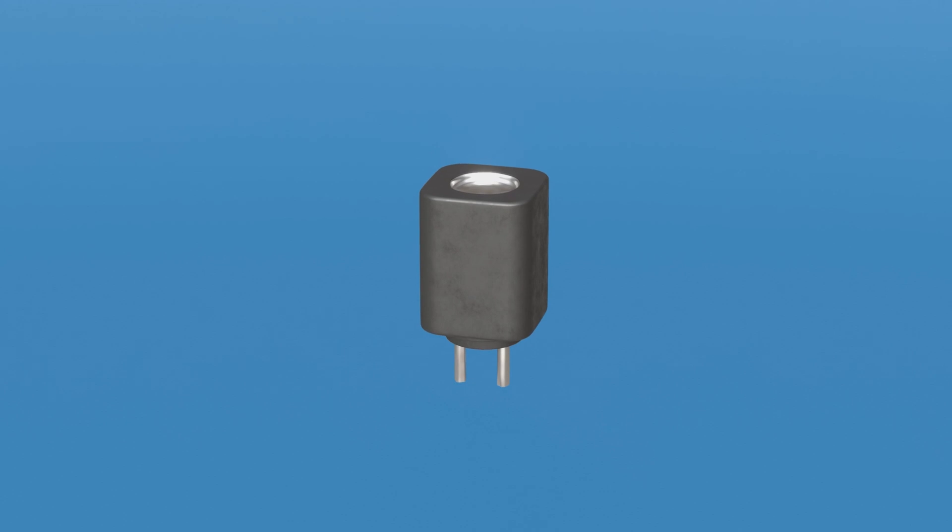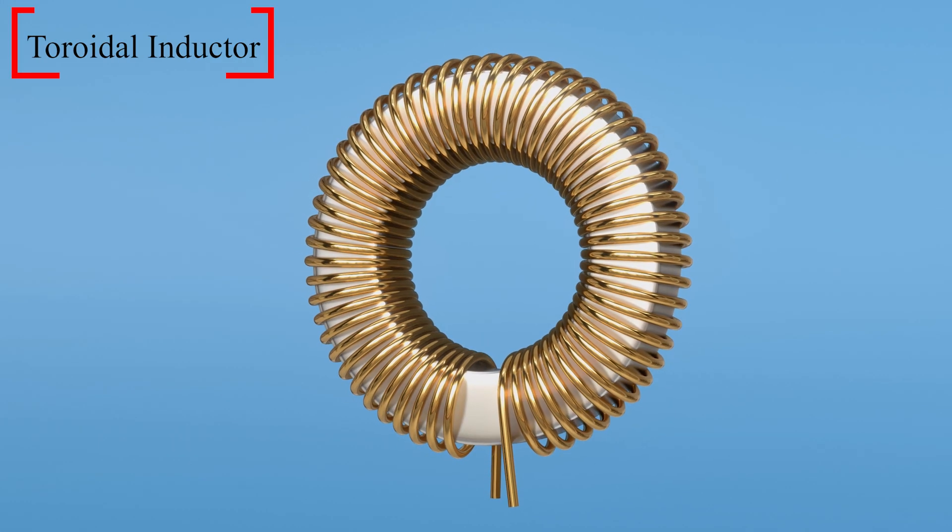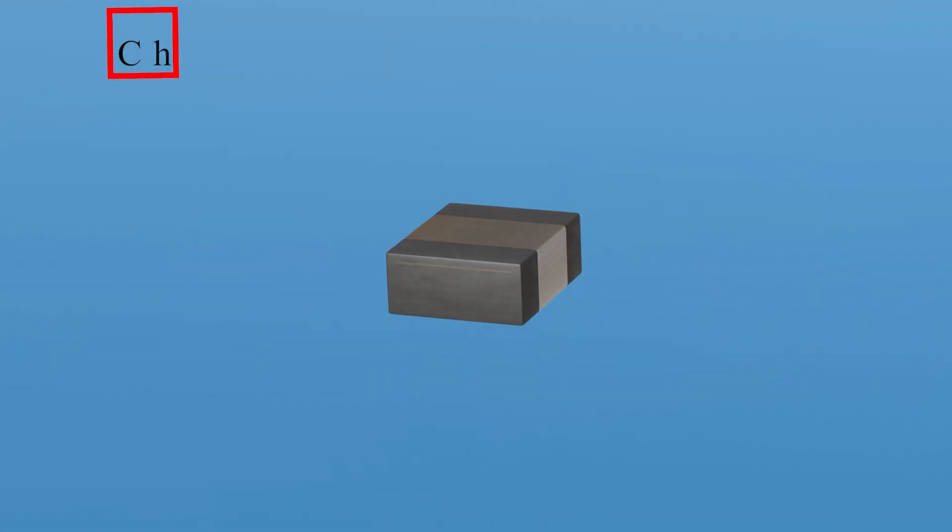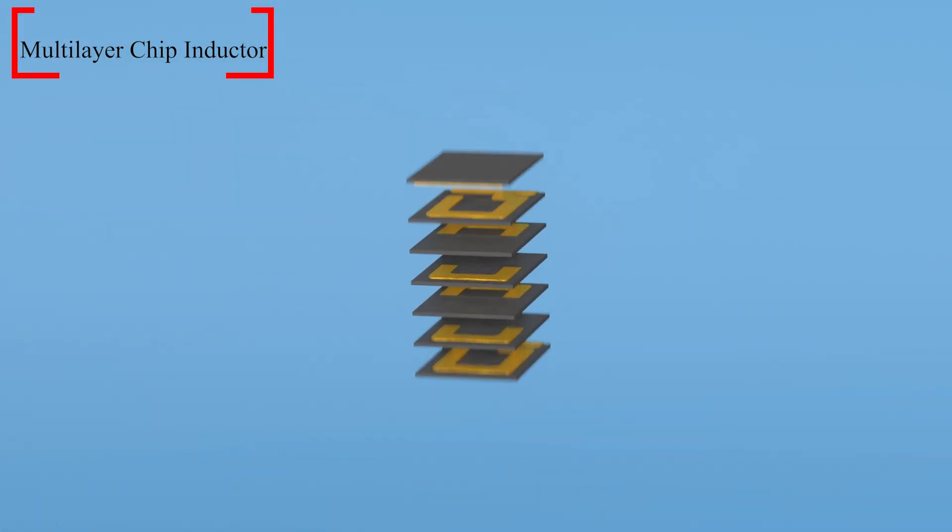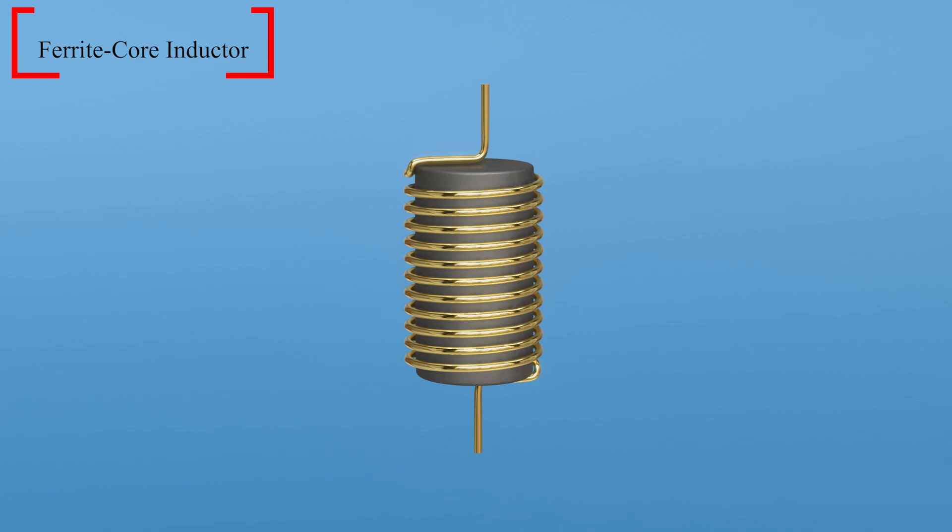Inductors come in different shapes and sizes, like the toroidal inductor, a donut-shaped core with a wrapped coil, the multi-layer chip inductor, multiple layers of coiled conductive traces on a ceramic substrate, and the ferrite core inductor, manufactured with a ferrite core inside the coil.